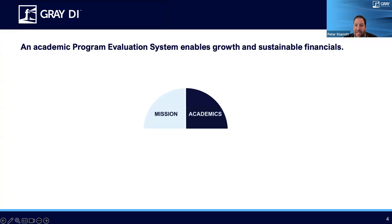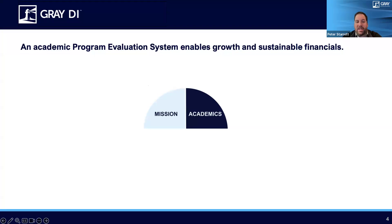Second, you need to keep track of academic performance. This would include metrics like DFW rates, graduation rates, number of students who passed certain exams like the NCLEX for nursing, and any number of other academic outcomes metrics that you're able to track — and probably do have built into your internal systems today.